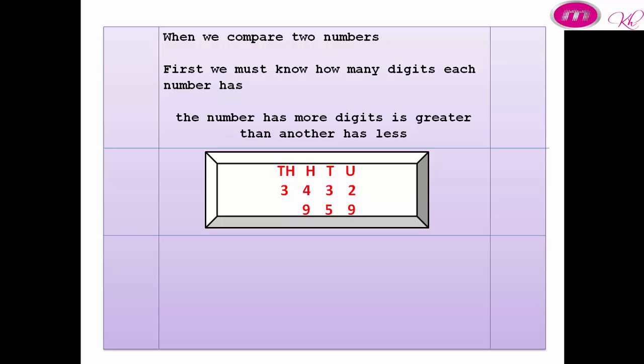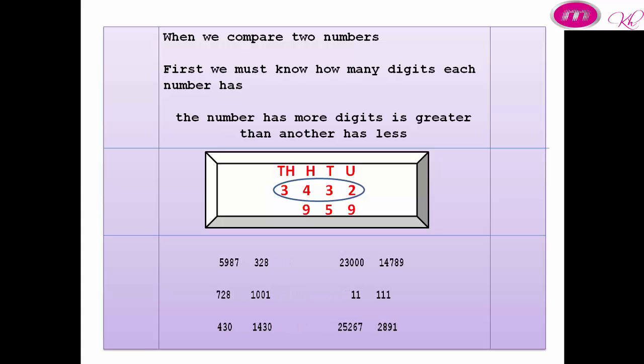For example: number 3462 and another number 959. The first number has four digits and the second number has three digits. That means the first number is more than the second number.